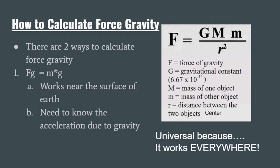Big M stands for the mass of one of our objects, and little m is going to be the mass of our other object. You might see it sometimes as big M, little m, or m1, m2 — same thing. It doesn't matter which object we assign to which m, because they're both being multiplied against each other and both to the same power. Lastly, we have R, and R is going to be the distance between the two objects' centers.